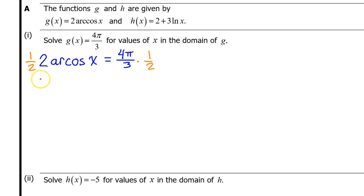On the left side, this will cancel out the 2, leaving behind arc cosine of x. On the right-hand side, the 2 in the denominator will divide into the 4 and leave 2π in the numerator, so 2π over 3. We need to get x by itself. We can cancel out arc cosine by taking the cosine of both sides of this equation. The cosine and arc cosine cancel each other out because they are inverses, so we are left with x equals the cosine of 2π over 3.